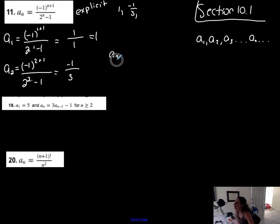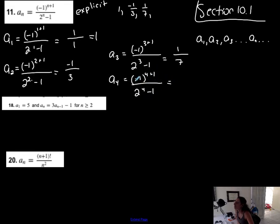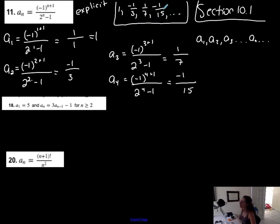To find the third term, I'm replacing n with three everywhere in this formula: two plus one over two to the third minus one. Negative one to the fourth power is positive one. Two to the third is eight, minus one is seven. So one seventh is the third term of this particular sequence. And the fourth term: negative one to the fifth is negative one. Two to the fourth is 16, minus one is 15. So negative one over 15 is the fourth term. I'll put dot dot dot to indicate that this will continue. These are just the first four terms.